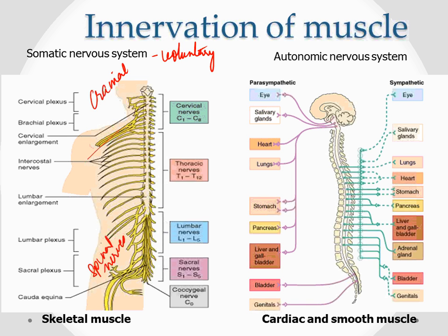The autonomic nervous system is made up of two parts which are diametrically opposite - their actions are opposite to each other. We have the parasympathetic system, which is an at-rest system, and we have the sympathetic system, which is an alert system. Whenever you have anything that requires you to go on high alert, the sympathetic will kick in. The parasympathetic is what's acting right now when you sit in class and you're just listening.